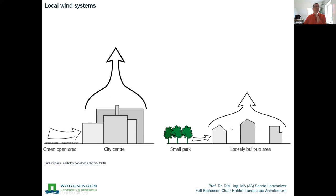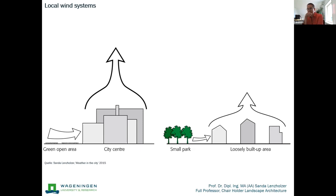When we have loosely built-up areas that don't warm up much, and a park that at night doesn't cool down as much as big open green areas, we have much less of these ventilation effects. So we can really play with these different interventions in many ways. I just want to round off with a couple of suggestions for how we can intervene in the urban system with different green interventions, along with some indications of their effects.